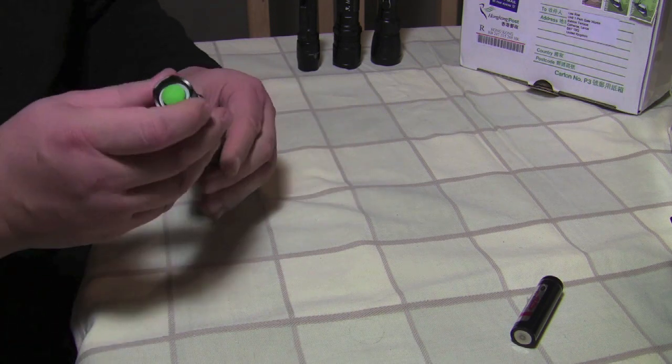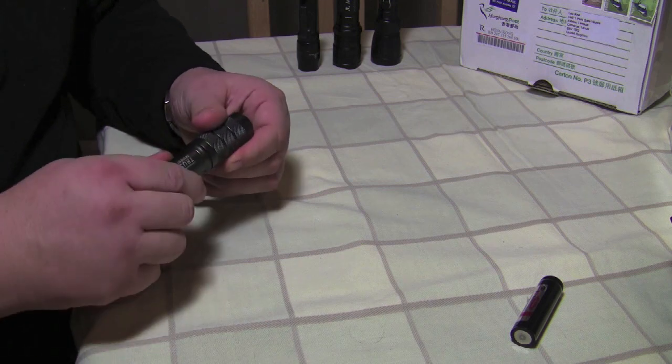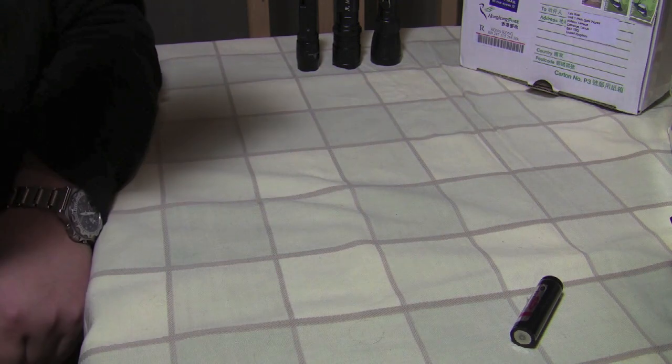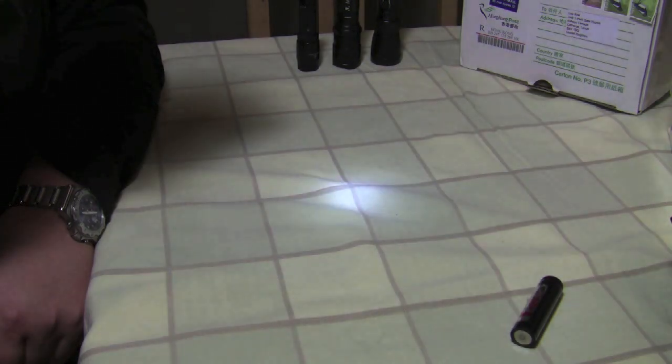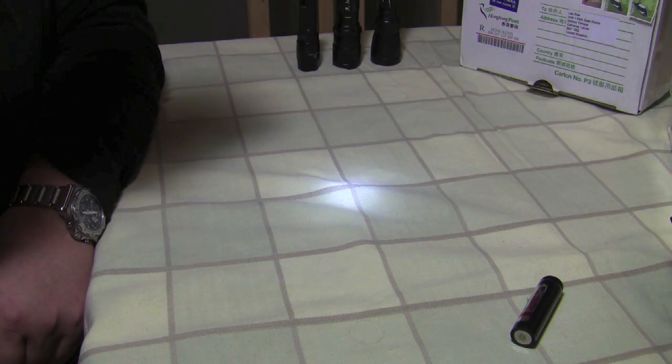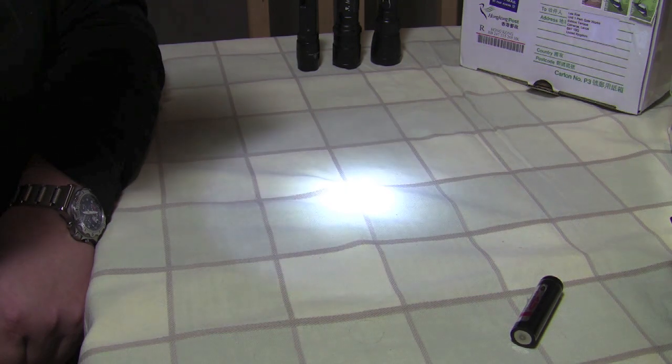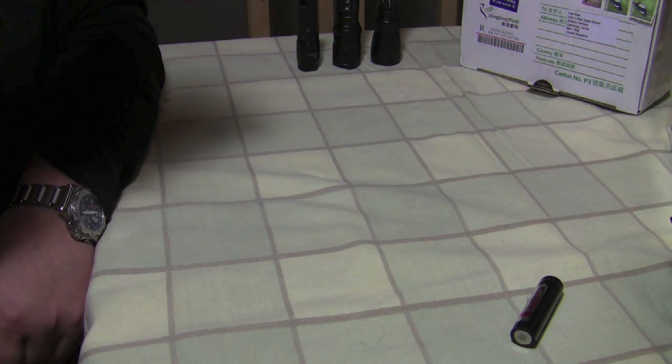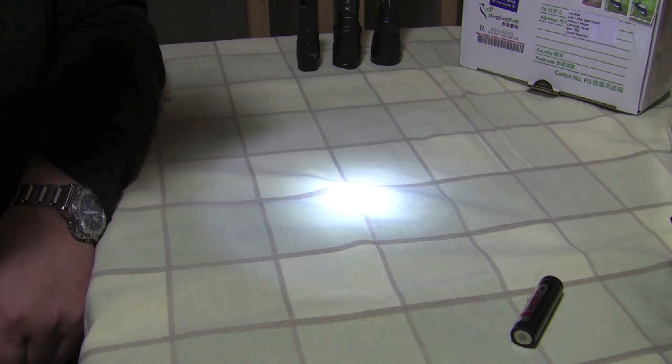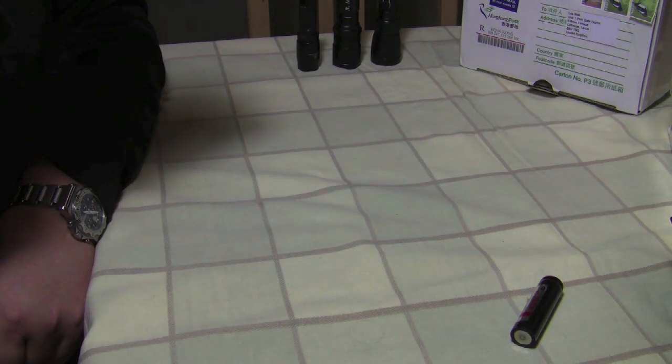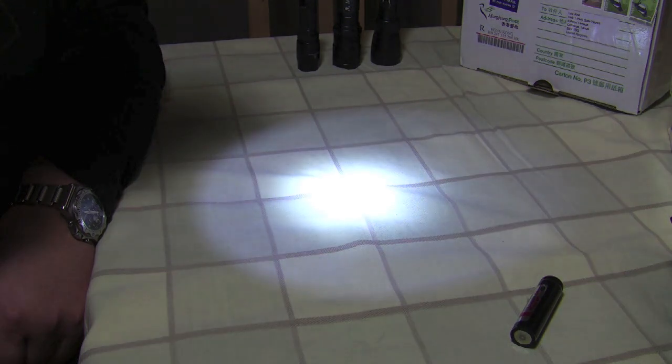At the moment, if I unscrew this quarter of a turn, we have the low, medium and then the high, just go through those again, low, medium and then high. There's the high.